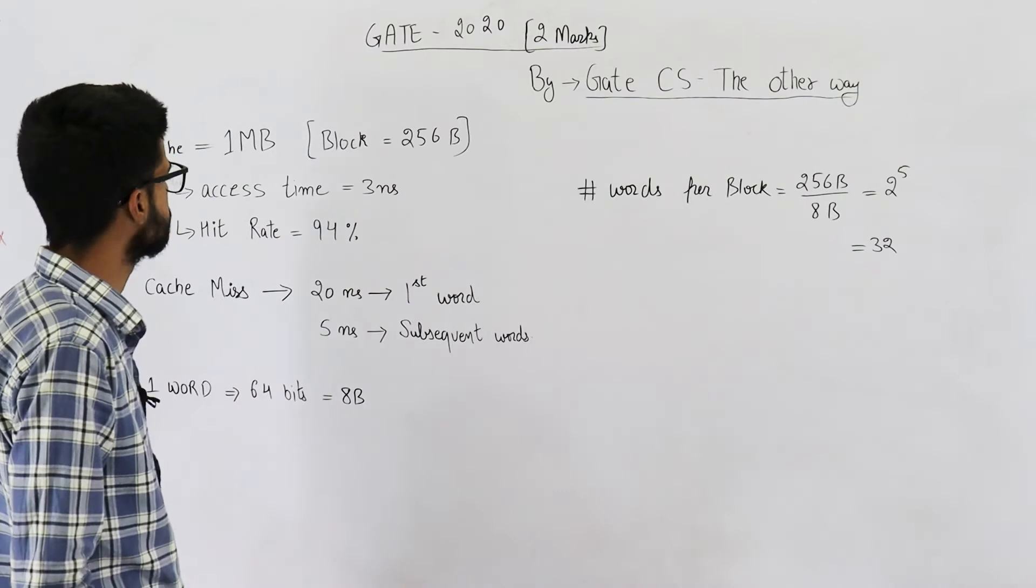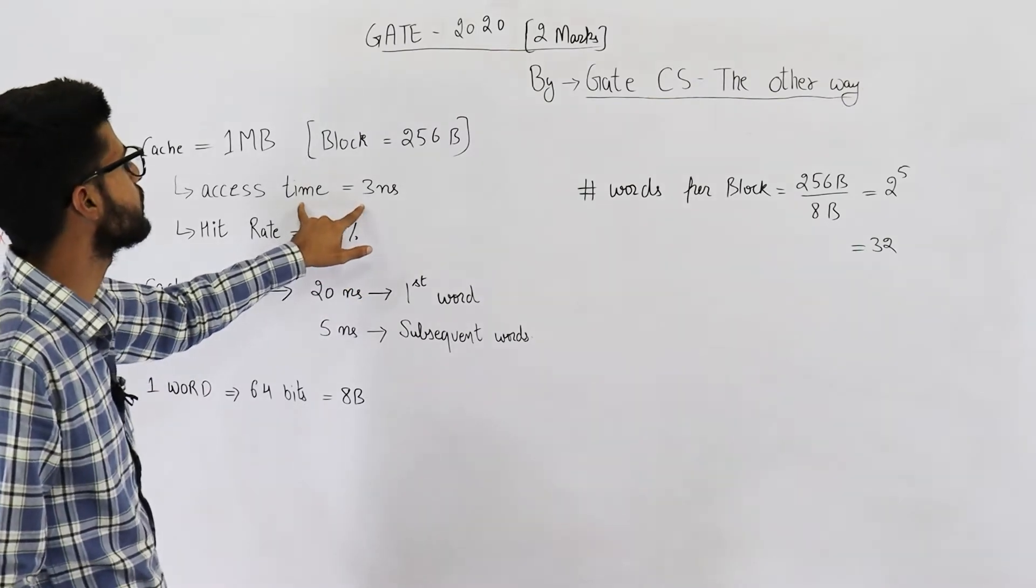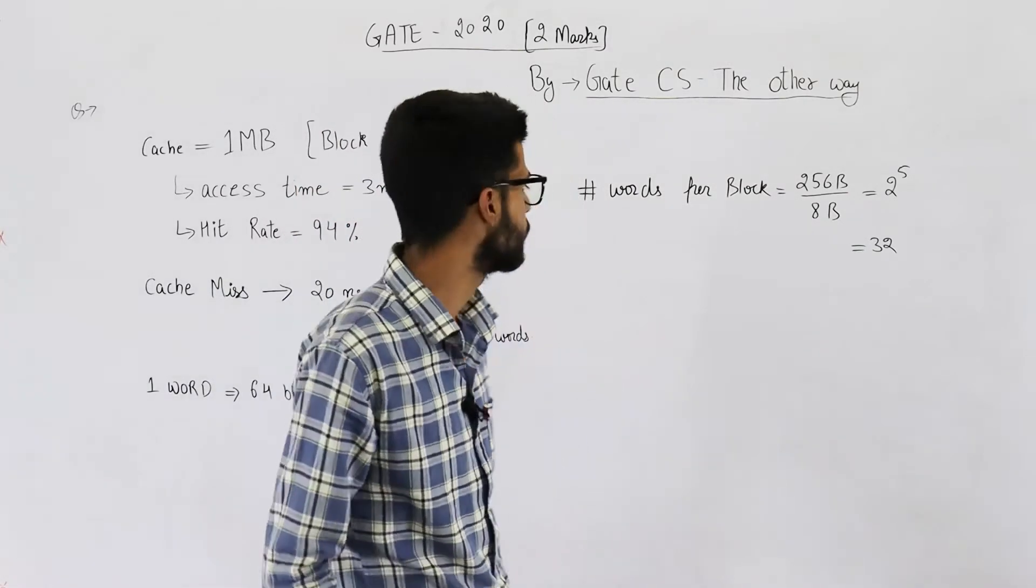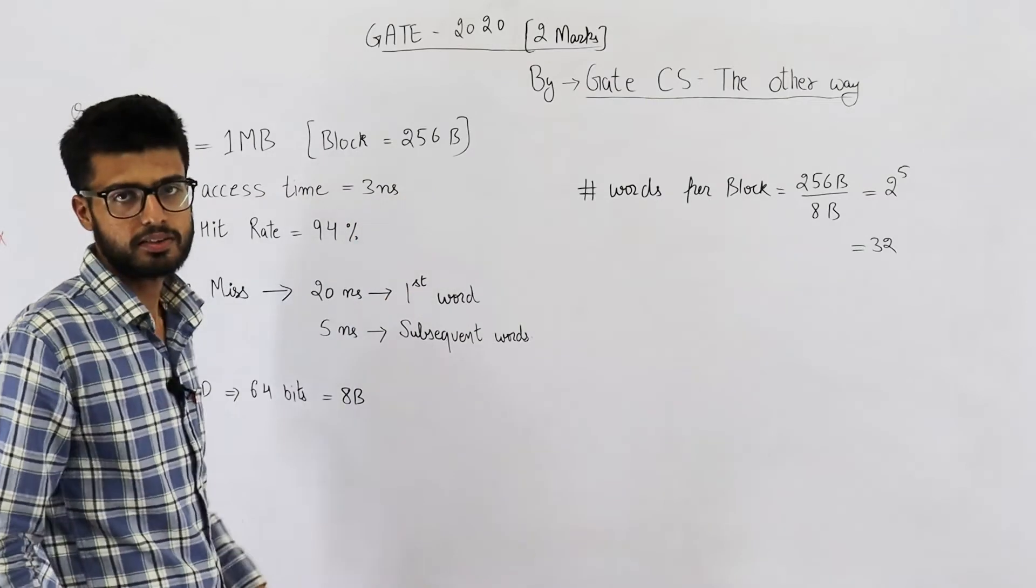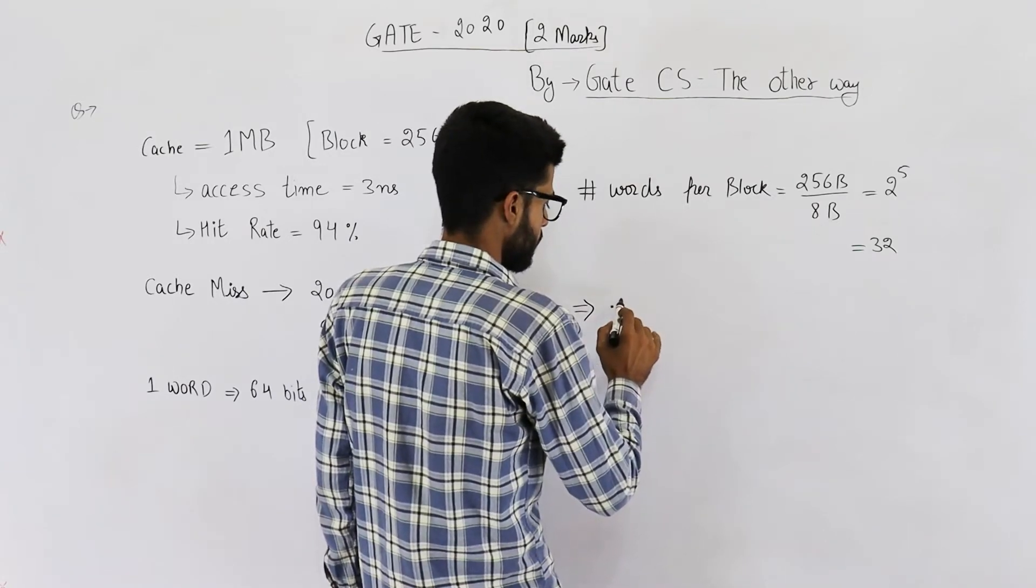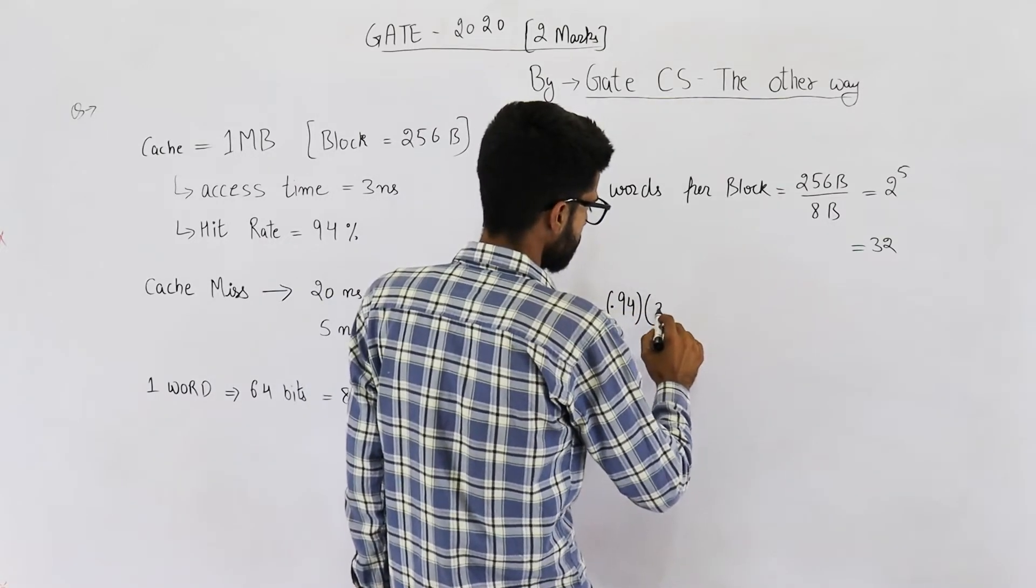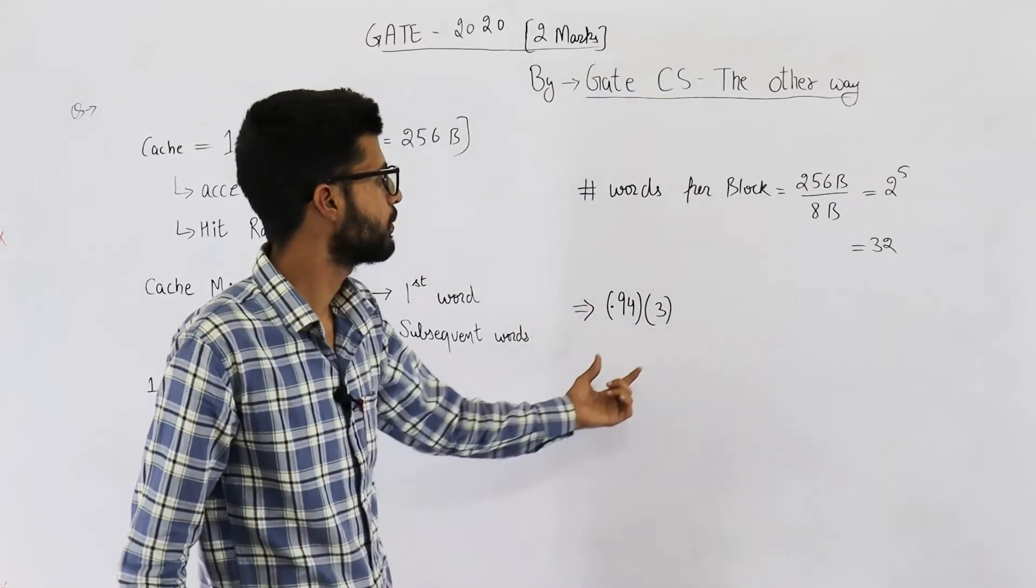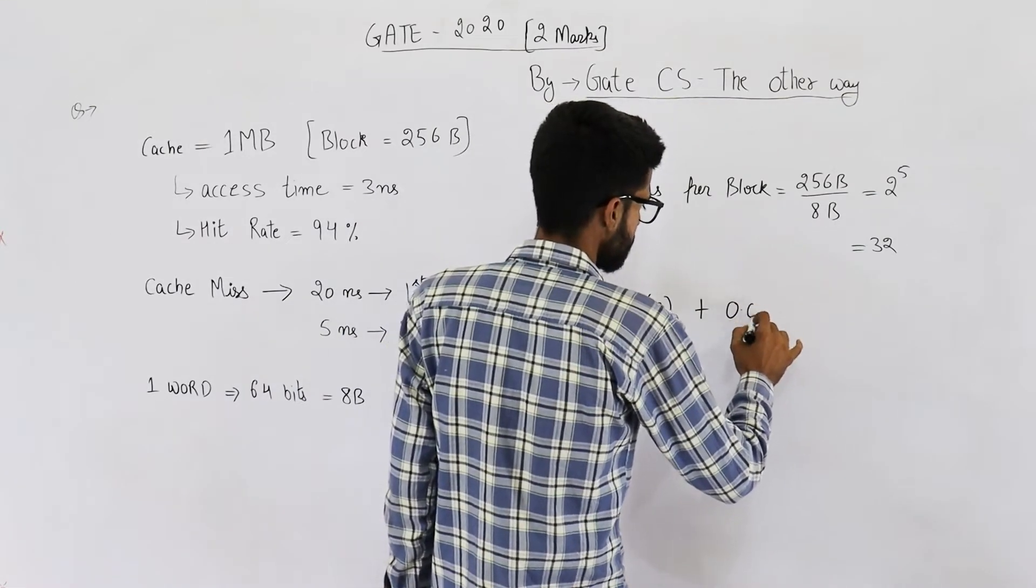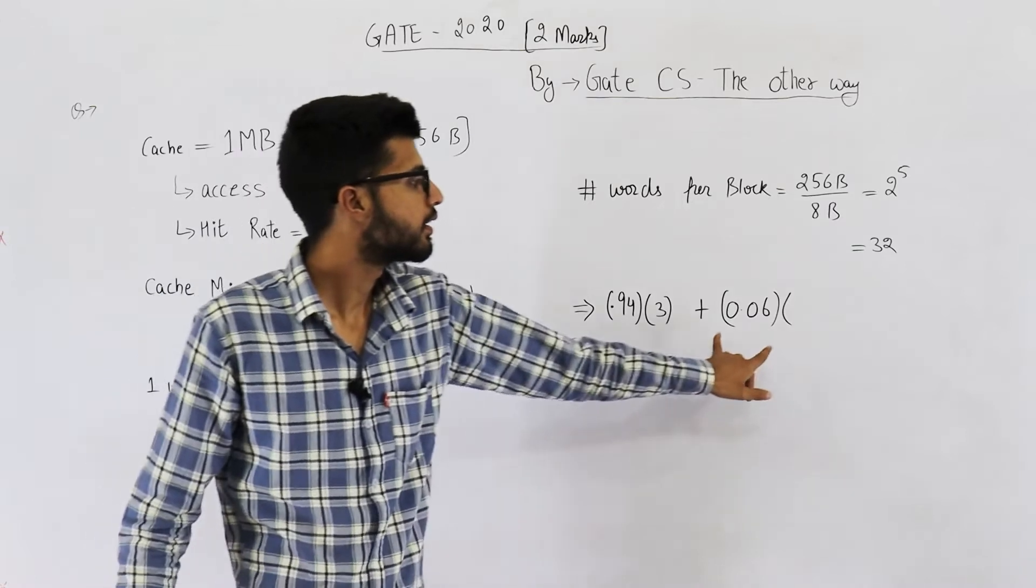They are saying hit rate of cache is 94 percent and cache access time is 3 nanoseconds. That means 94 percent when there is a hit, we only spend 3 nanoseconds to get the required data. So this means 0.94 times 3 nanoseconds. Let's see what happens in the remaining 6 percent times. 0.06 into - here we are going to write how much time is spent when there is a miss.